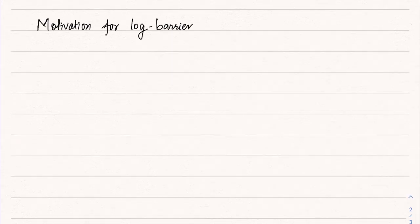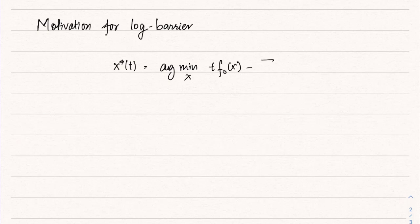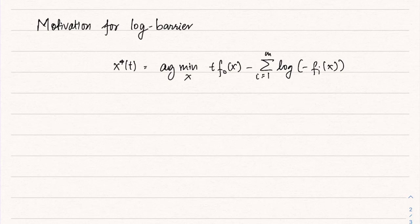Let us continue our discussion and try to figure out the motivation behind using that particular log-barrier function. The interior path and interior point method part is clear. But why did we use the log-barrier function? x*(t) is given by argmin over x of t·f₀(x) minus the summation over i from 1 to m of log(−fᵢ(x)). That was the objective function at each t, and t increased by several factors of 10 or 20 at each iteration.